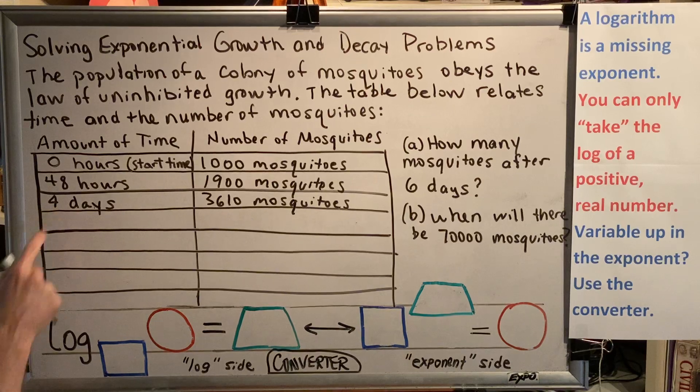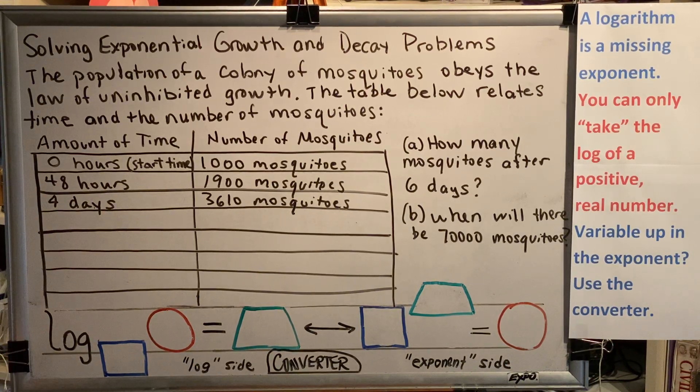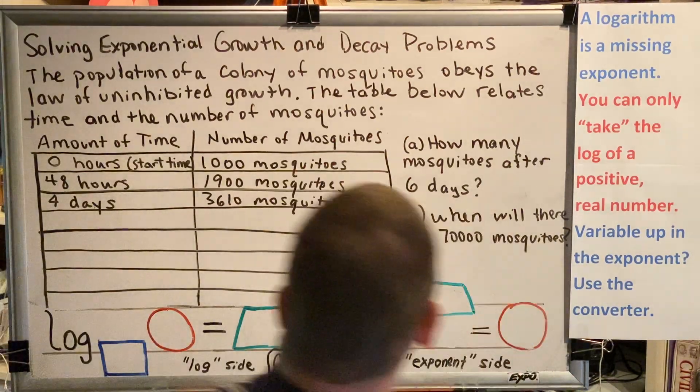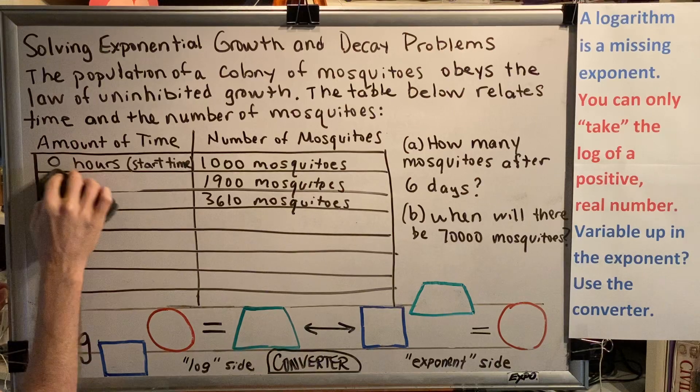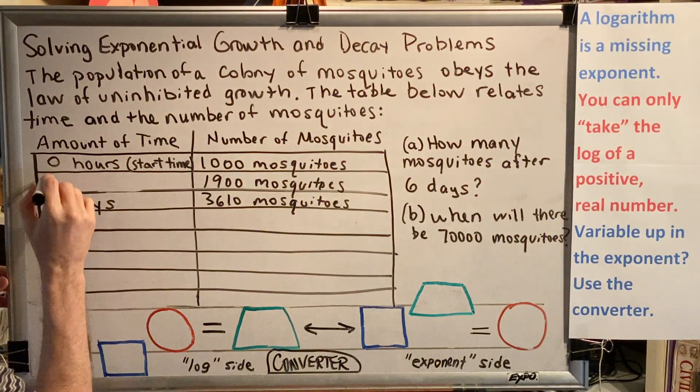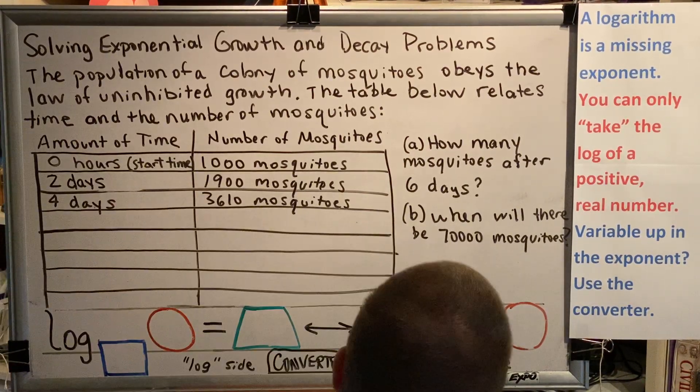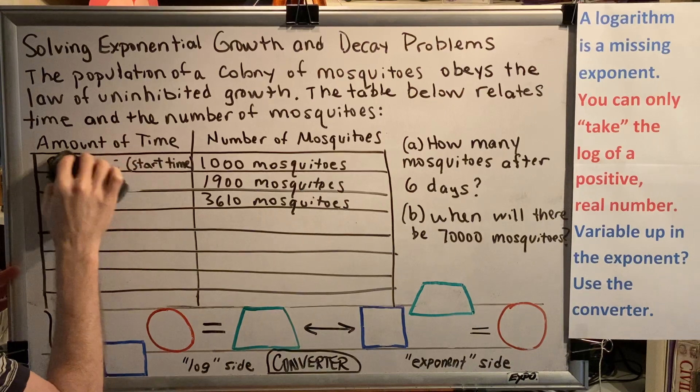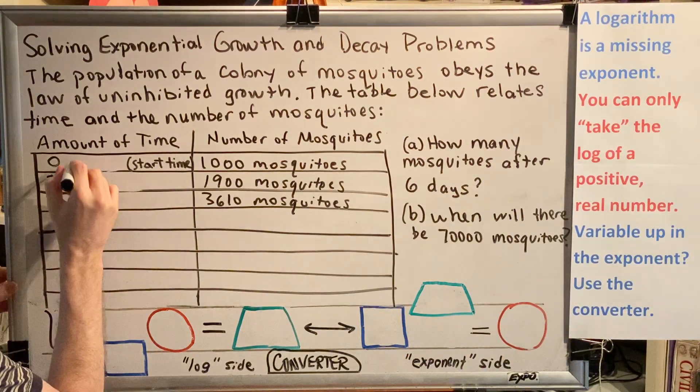Because the question asks for days, our table needs to be using days. So let's convert everything to days. The third row already says four days. This row, 48 hours, well, 48 hours is two days. So I'm going to erase 48 hours here and convert that to days, two days.